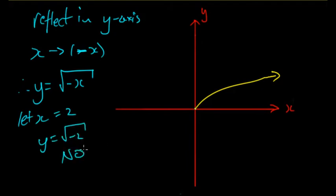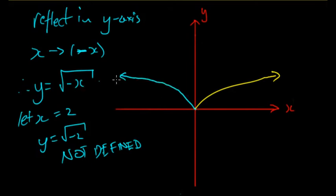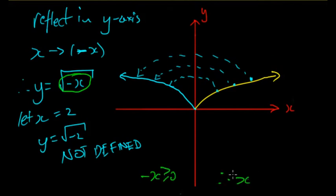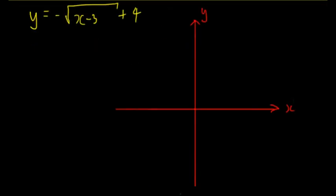Reflecting in the y-axis: we replace x with negative x, giving y equals the square root of negative x. For x equals two, y equals the square root of negative two — not defined. So the graph is reflected in the y-axis. The reason is that negative x values now make the expression inside positive, since two negatives make a positive. Therefore x must be less than or equal to zero.